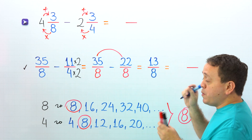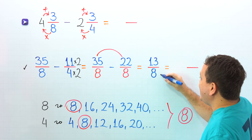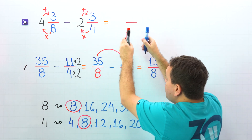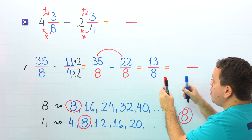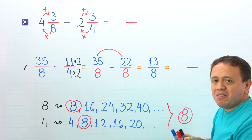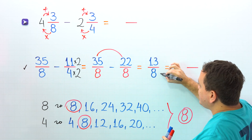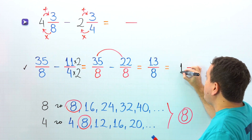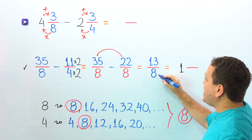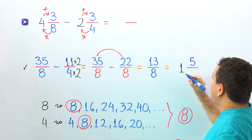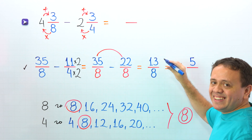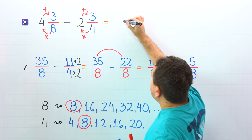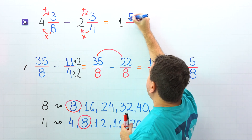But hold on — 13 eighths is an improper fraction, because the numerator 13 is greater than the denominator 8. We don't want the answer as an improper fraction. Since we started with two mixed numbers, we'll finish with a mixed number. We need to convert 13 eighths to a mixed number. How many times does 8 go into 13? 8 goes into 13 one time. 1 times 8 is 8, and to get 13 we need to add 5. The denominator stays the same, so the answer is 1 and 5 eighths.